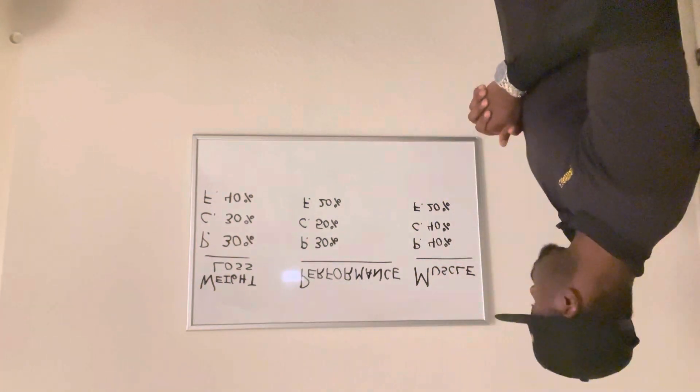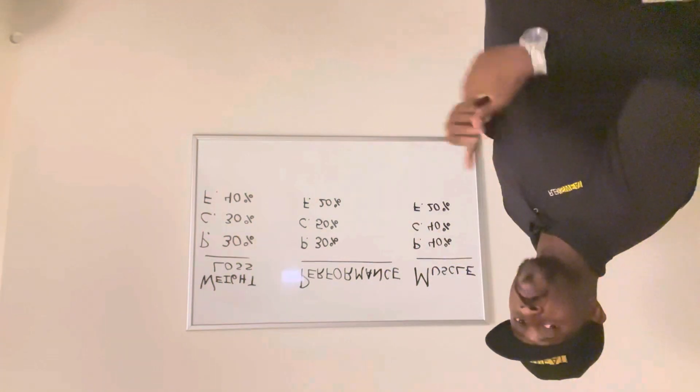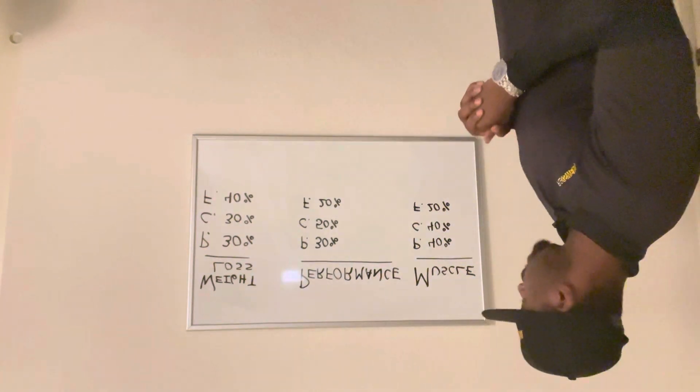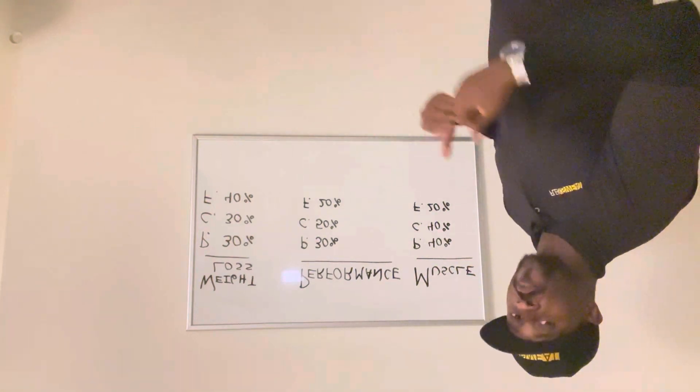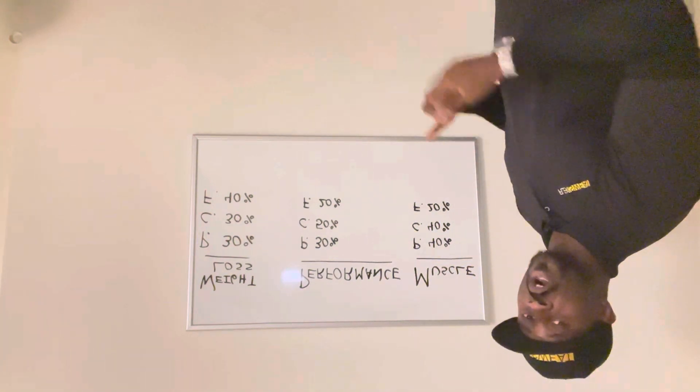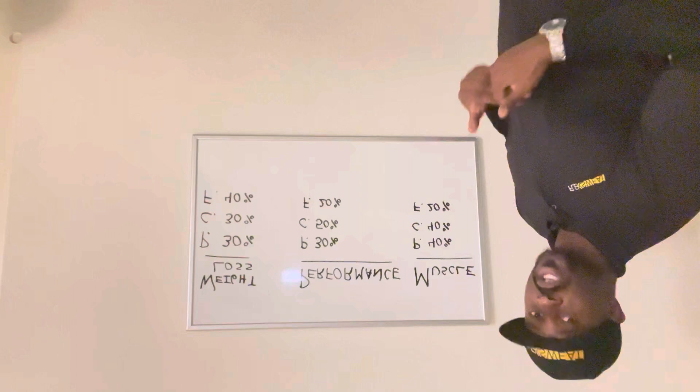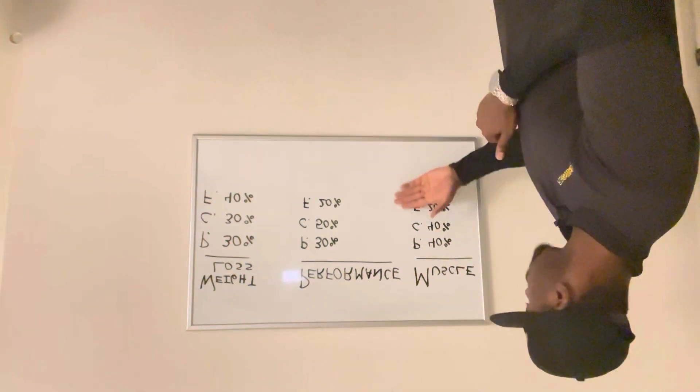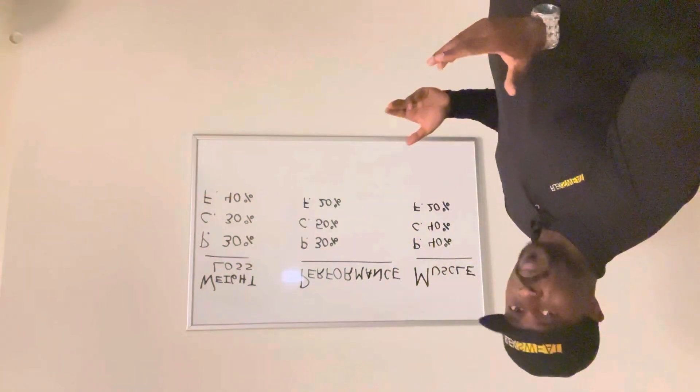For building muscle: 40% protein to rebuild those broken down muscle tissues after exercise. 40% carbohydrates - we want that number up so we have fuel for the workout and also have enough carbohydrates to replenish the glycogen stores that we depleted from exercise. 20% fats just to maintain health.